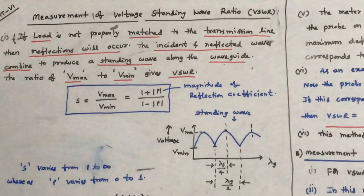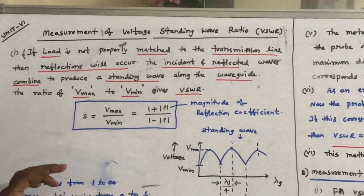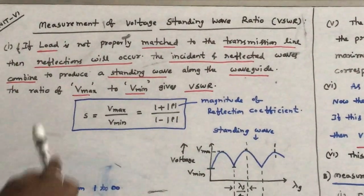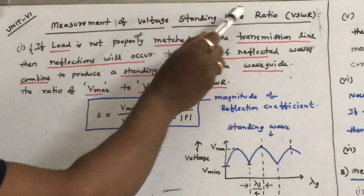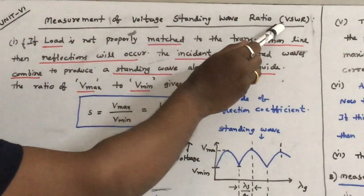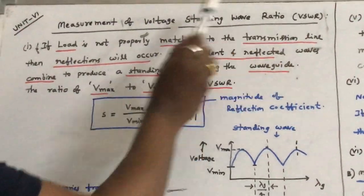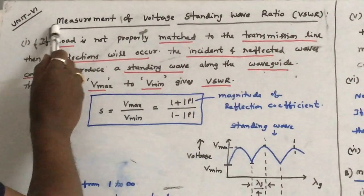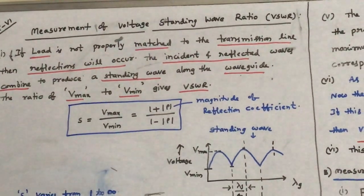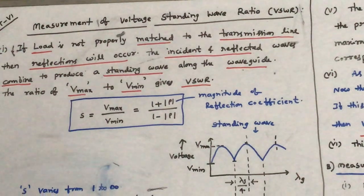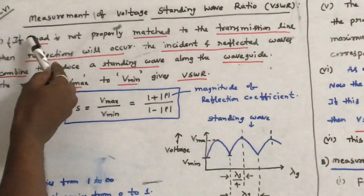Hi, welcome to the series of video lectures on microwave engineering. Today in this session we will discuss measurement of voltage standing wave ratio, which is also called as VSWR. This article comes in unit 6 of microwave engineering.